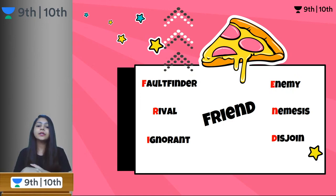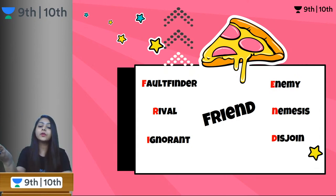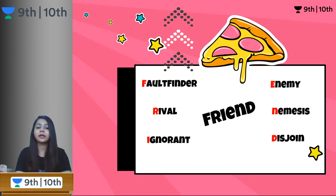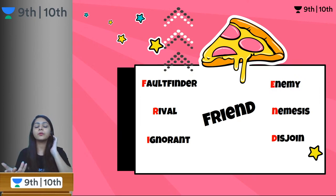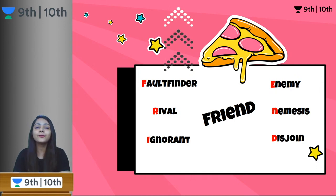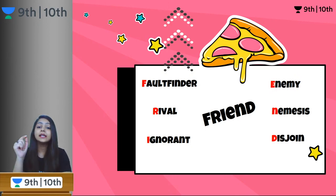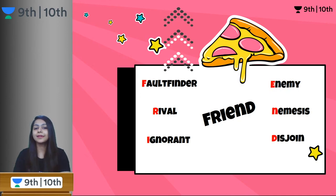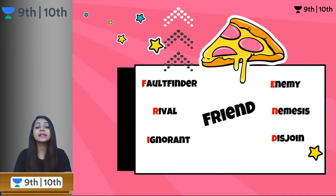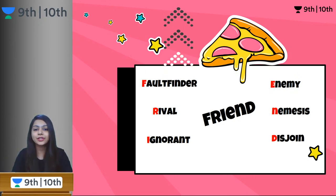A fault finder always looks for faults and flaws in you — you would never want that person as a friend. A rival is an enemy. Somebody who acts ignorant or ignores you would never be your friend. Nemesis is basically a long-standing rival — a very old enemy. And disjoint means separate — somebody who has become separated from you. These are all people you would not call your friend.